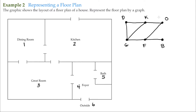So there's another way that we can do this. I have to have six vertices, and then maybe do something like this: the dining room, the kitchen, the outside, bath, foyer, and great room.